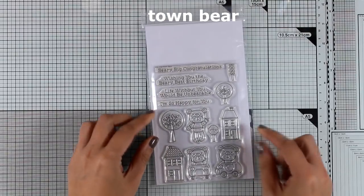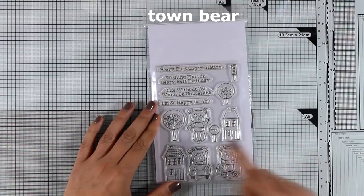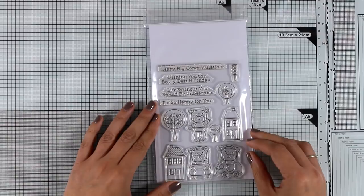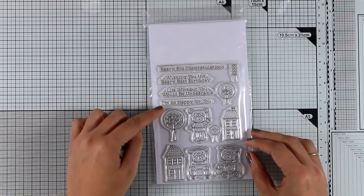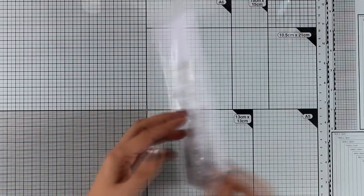And this is the Town Bear, an adorable stamp set with three little bears, two are driving a car, there are houses and trees to create little scenes and of course lovely sentiments such as very big congratulations, wishing you the very best birthday and many more.